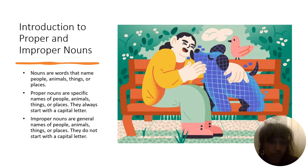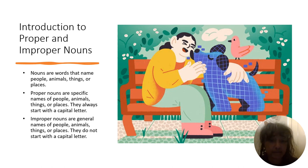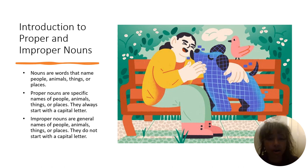Nouns are words that name people, animals, things, and places. Proper nouns are specific names of people, animals, or places — and they always start with a capital letter.